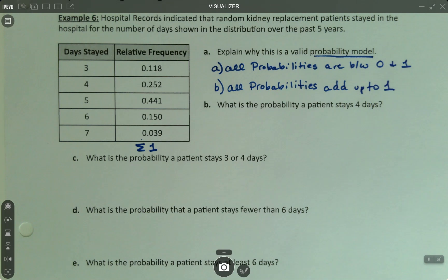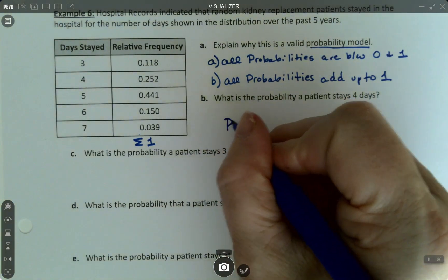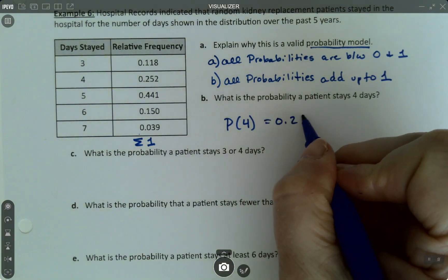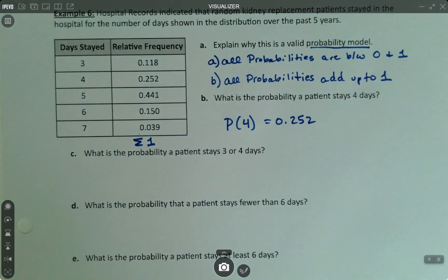What is the probability a patient stays four days? Well, that's very easy. That's section 5.1. So the probability of four is 0.252. Easy peasy.